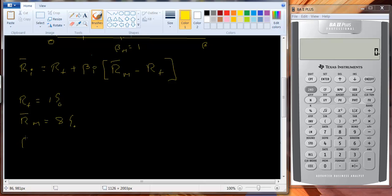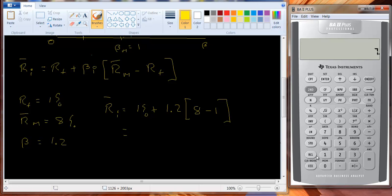If we have a stock with a beta equal to 1.2, let's find the expected return. The expected return is going to be equal to 1% plus 1.2 times the expected return of the market minus the risk-free rate. So if we work that out, we get 7 times 1.2 plus 1%, we expect 9.4%.